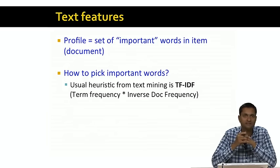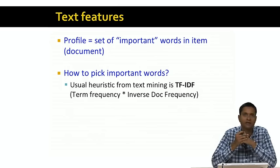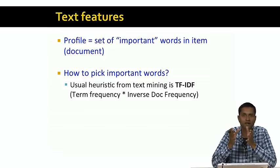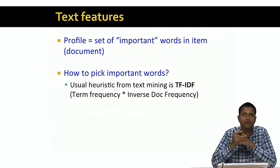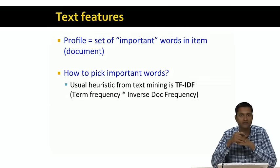Let's look at a special case of text. For example, we might be recommending news articles. What's the item profile in this case? The simplest item profile is to pick the set of important words in the document. The usual heuristic from text mining is a technique called TF-IDF, or term frequency inverse document frequency. Many of you may have come across TF-IDF in the context of information retrieval, but here's a quick refresher.